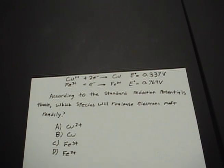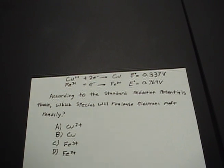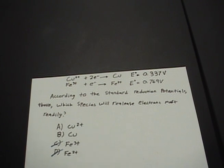So how do we make our choice from copper 2 positive, copper, iron 3 positive, and iron 2 positive? We can rule out C and D. Now we need to figure out whether A or B is correct.